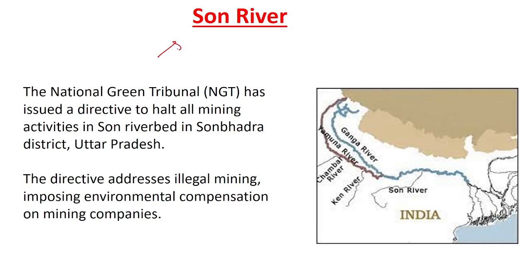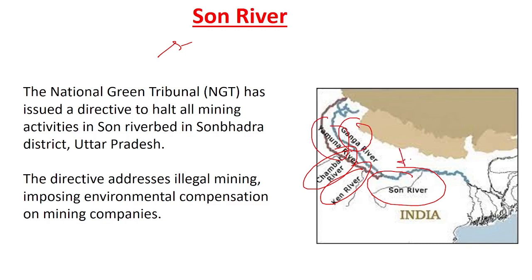We are talking about Sone River. Where is Sone River? Uttar Pradesh. Here you can see in the map — this is Sone River, here is Ken River, here is Chambal, this is Yamuna River and this is Ganga River. You can see them in Uttar Pradesh.